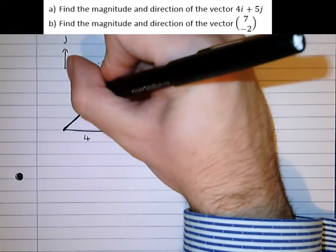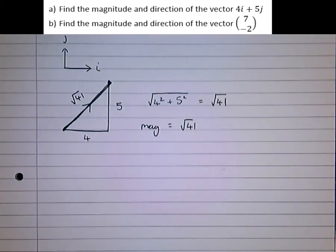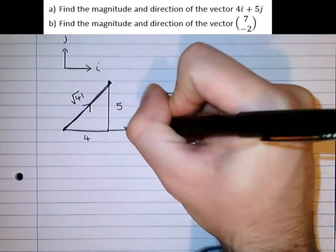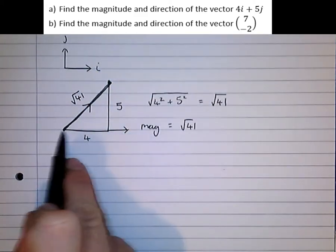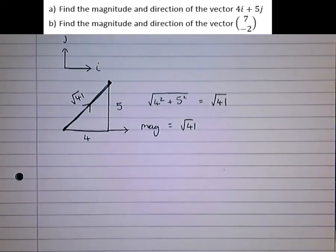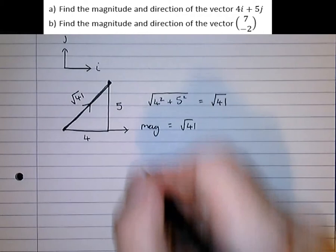I'll mark this on the diagram here. Now a bit more difficult, but only slightly, is the direction. Everything is relative to the positive i direction. So everything is relative to this arrow here, pointing directly right. The direction is the angle it makes, anticlockwise, with this i direction.